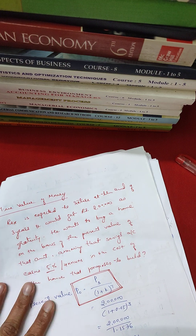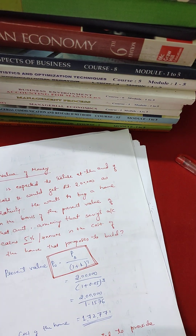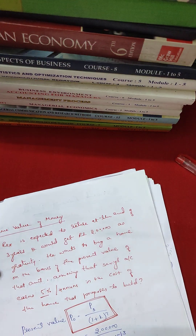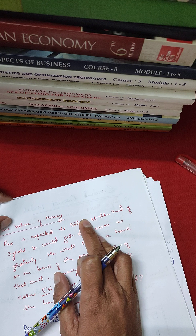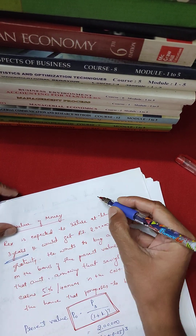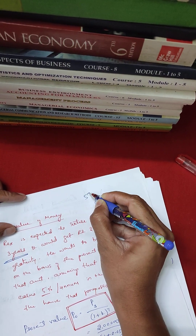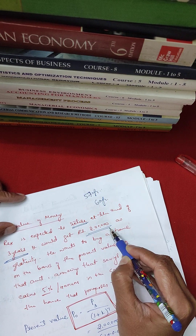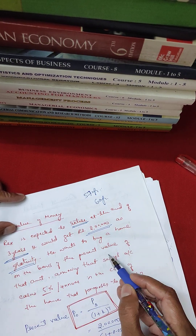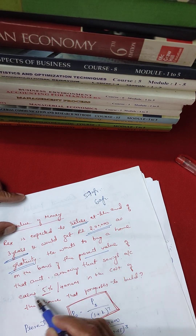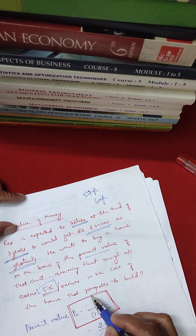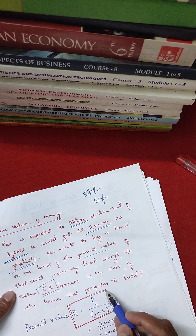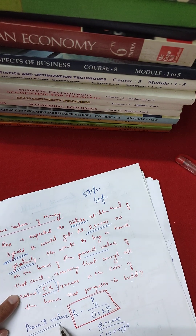Next, time value of money — the same formula is used. Here is a question: Rex is expected to retire at the end of the third year and would get two lakh rupees. He wants to buy a home on the basis of the present value of that amount, assuming that the savings account earns 5% per annum. Find the cost of the house he proposes to build.